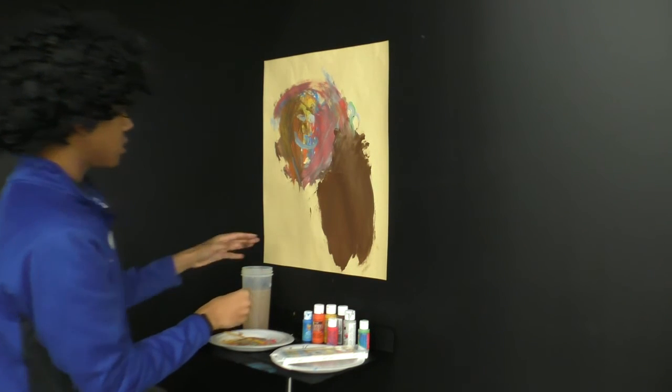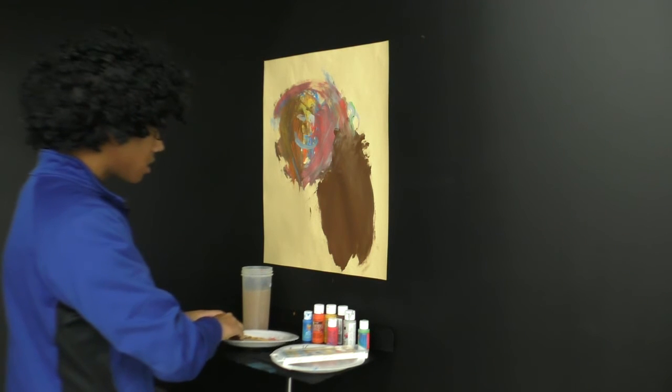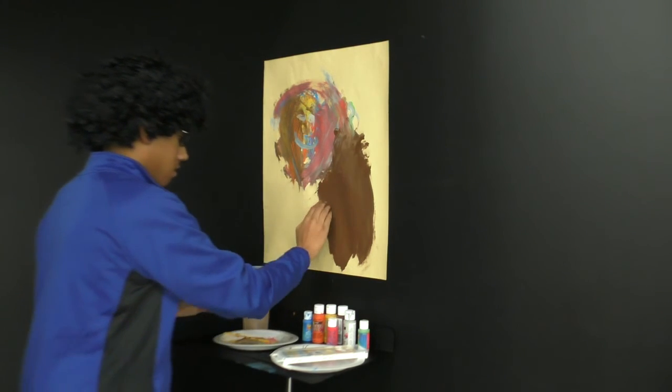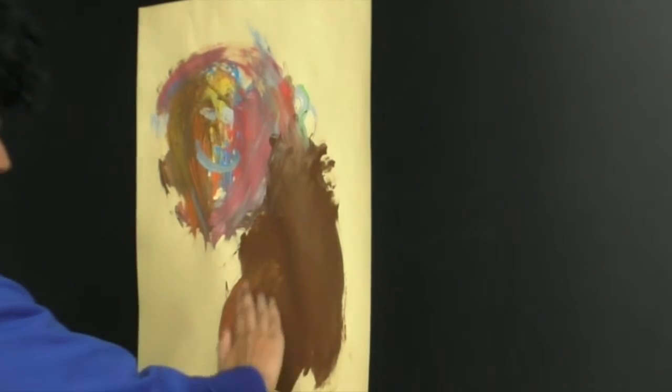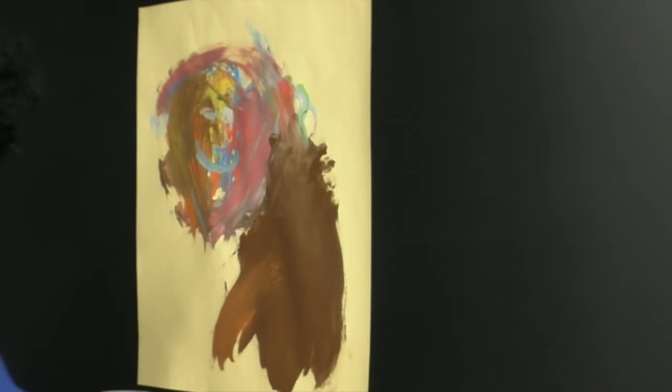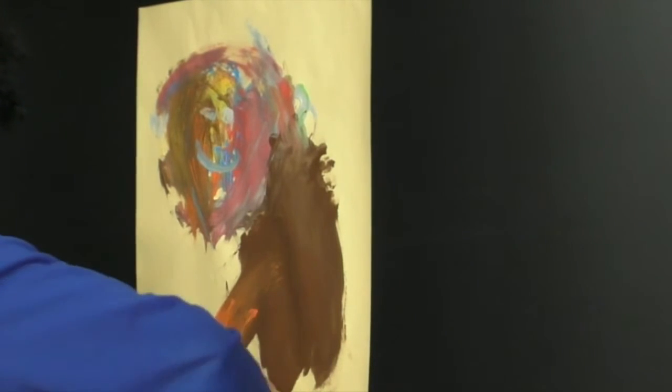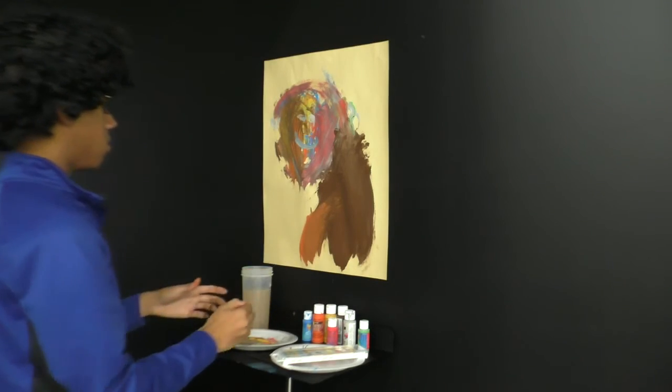Let's see, let's use some orange to show his legs. Mix it with the brown, makes it look fuller, more realistic. Yellow.